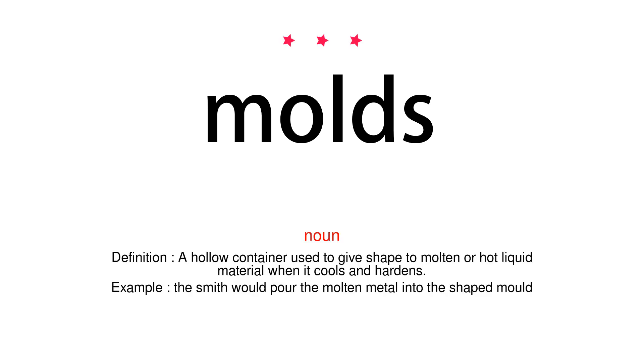Molds. Noun. Definition: A hollow container used to give shape to molten or hot liquid material when it cools and hardens. Example: The smith would pour the molten metal into the shaped mold.